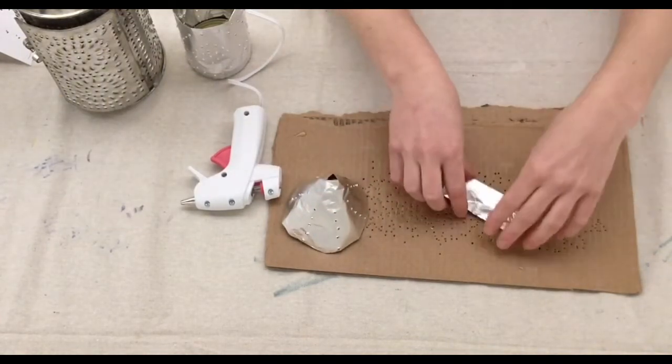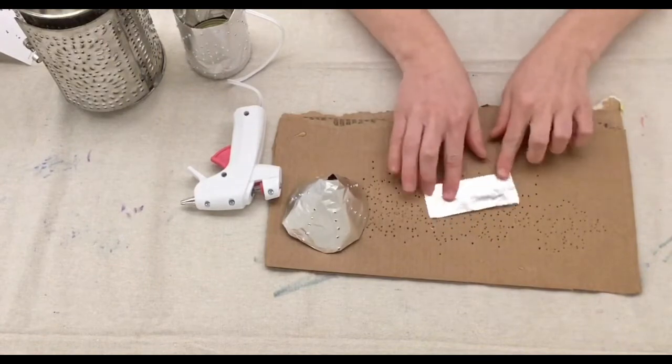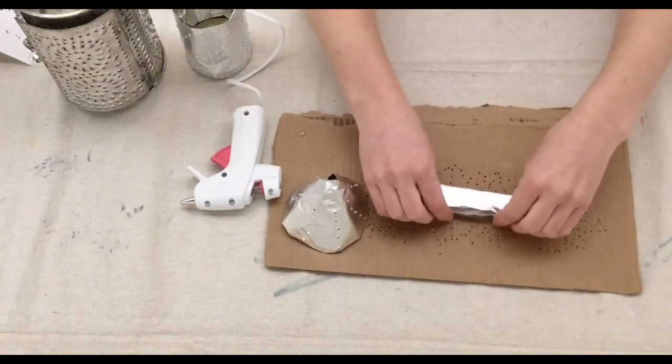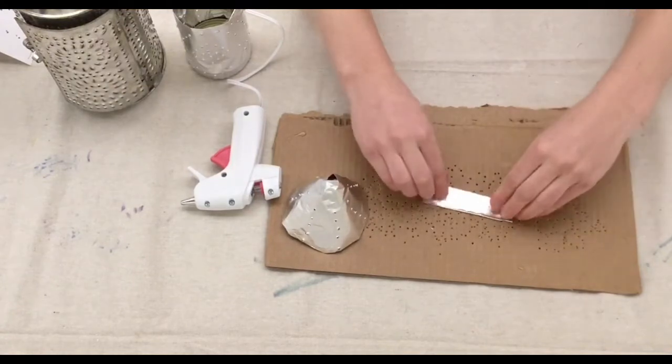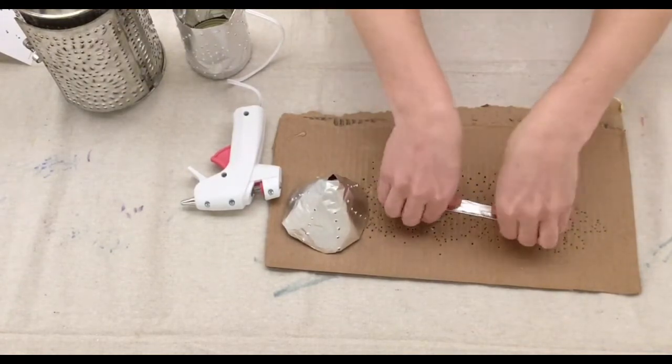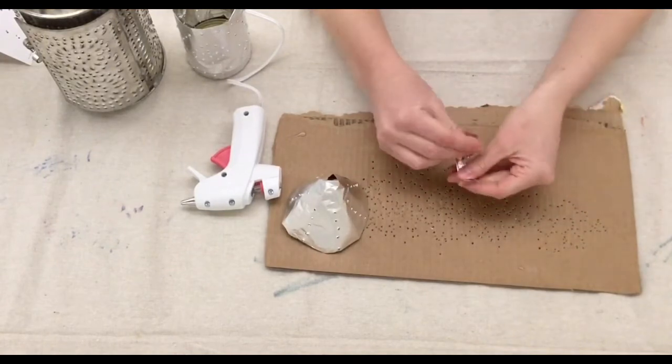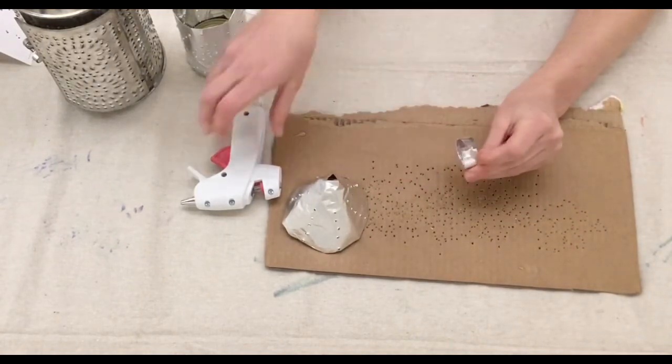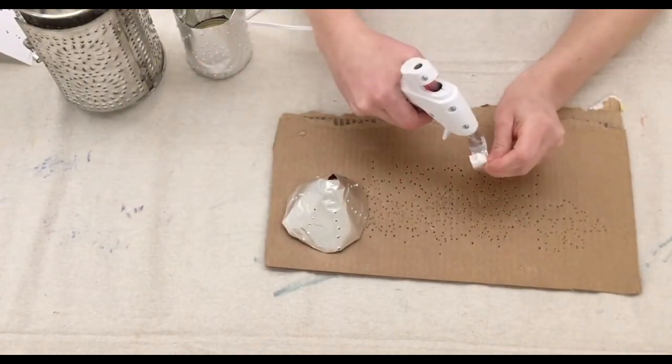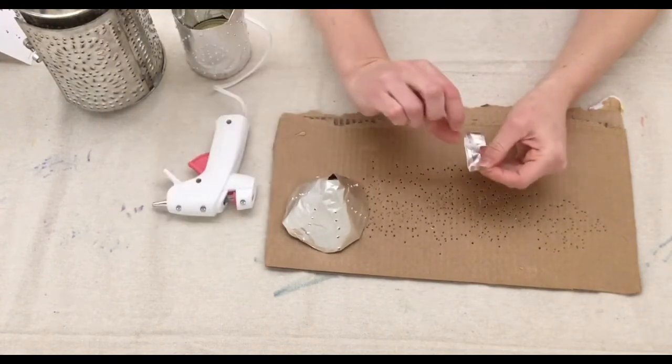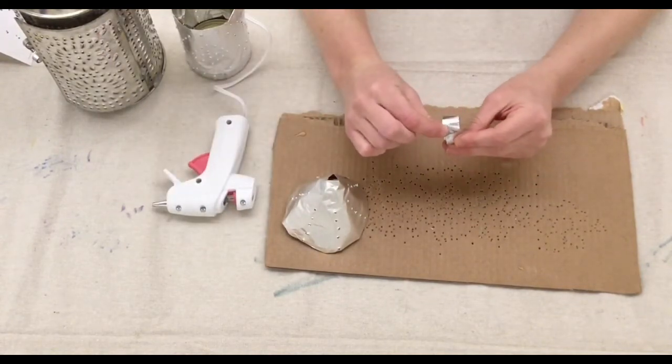The last thing I'm going to make is a little handle for my lid. So I'm going to take a piece of aluminum foil four inches by two inches. I'm going to fold it into thirds lengthwise and then I'm going to wrap it into a circle. I'm going to use my hot glue gun to put a little bit of glue right on the end and pinch it closed.